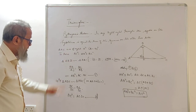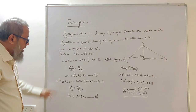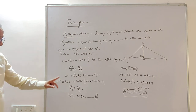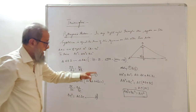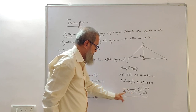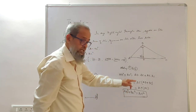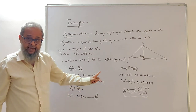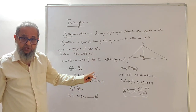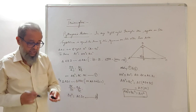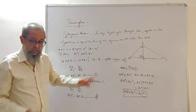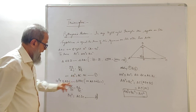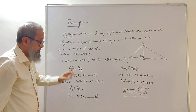The converse of Pythagoras theorem is: if in any triangle the sum of the squares on two sides is equal to the square on the third side, then that is a right angle triangle. I hope you have understood this. There was some mistake which I have corrected; this is how it is to be proved.